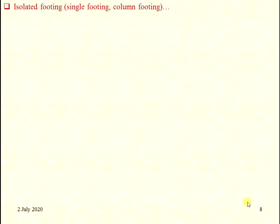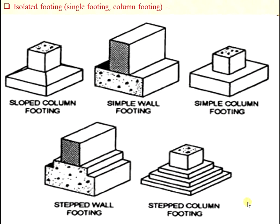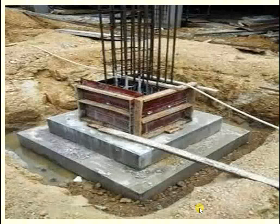Isolated footing types include: sloped column footing, simple wall footing, simple column footing, wall footing, and stable column footing. The RCC footing is provided for the column construction, as seen in the RCC footing picture.